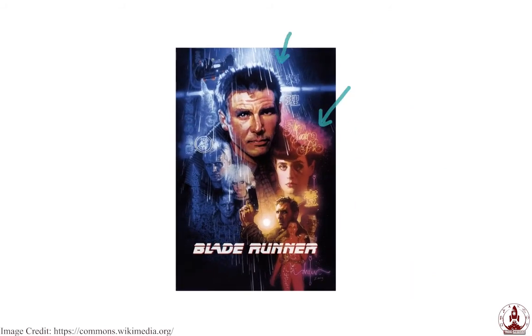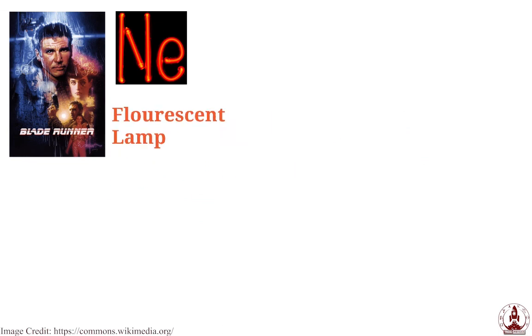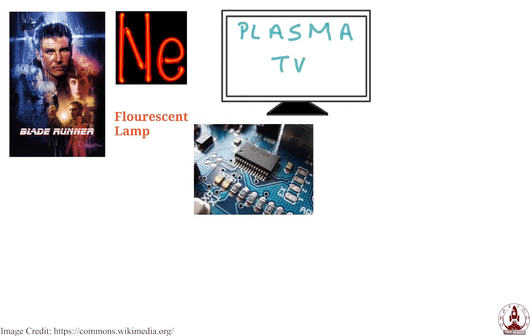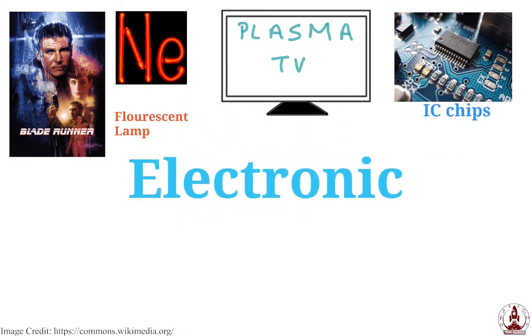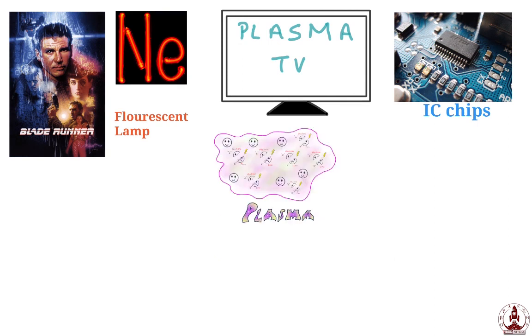Do you remember the movie Blade Runner? All those fancy lights in the background are neon lights, and they are plasma. In order to simulate the future in the movie, they used plasma lights — and they were not far from the truth. Our future is very much dependent on plasma technologies. Besides neon lights, the common fluorescent lamp is also a plasma. Plasma has also been used to generate colors in plasma TVs, and we could not have advanced this far in electronics if plasma had not been adopted in its manufacturing process.